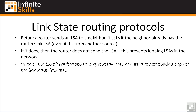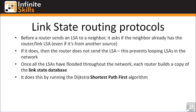So that's what happens when a router starts up. Once all of the LSAs have flooded throughout the network and basically all the routers say they know about all routes and everything on the network, each router builds a copy of the link state database. It does this by running the Dijkstra shortest path first algorithm — a mathematical algorithm that is too complex to cover in this course. Unlike EIGRP, most people don't care about the math behind the SPF algorithm; they just care about what pops out the other end.